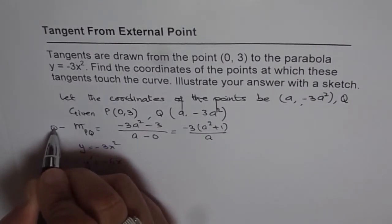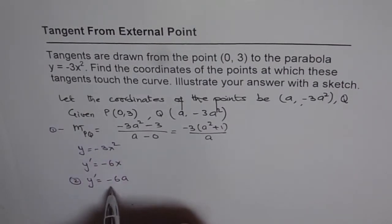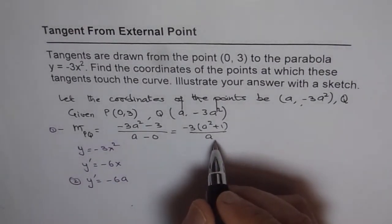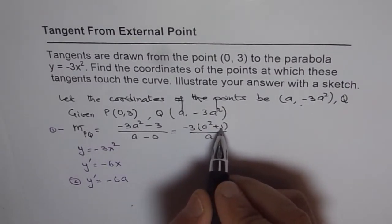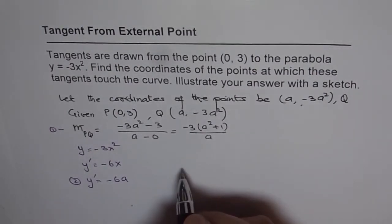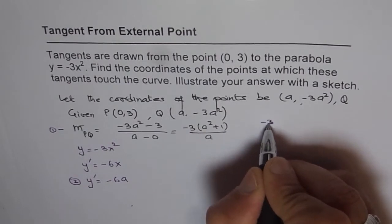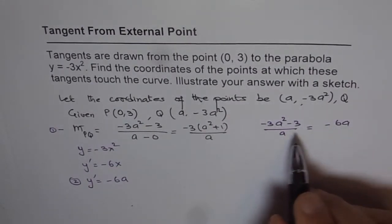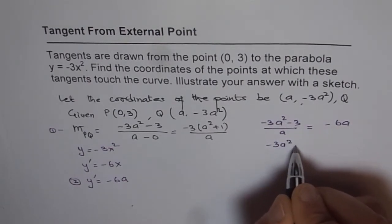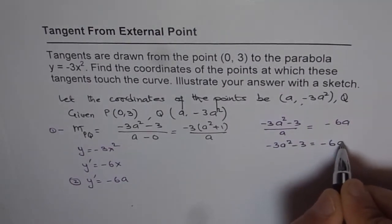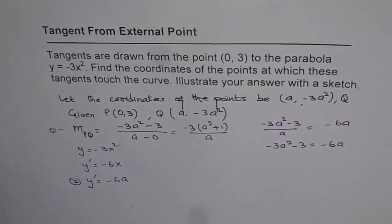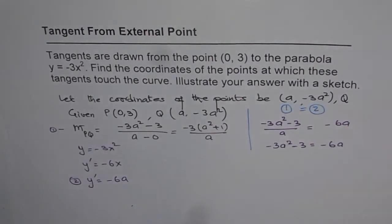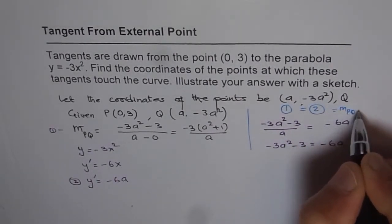Now we have slope from equation 1 and this is equation 2. These are slopes for the same point a — they should be the same. So if we equate them, we can find the coordinates of the point. We will equate minus 3(a squared plus 1) over a with minus 6a and find our answer. So we write: minus 3a squared minus 3 over a equals minus 6a, since both equations refer to the same slope at the same point.